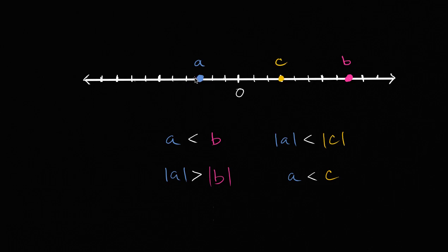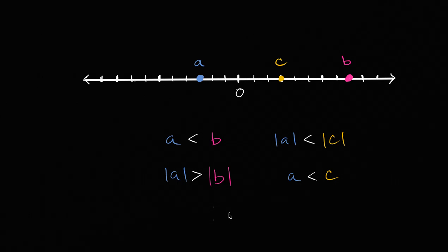What I have here are three numbers plotted on the number line: the number A, the number C, and the number B. Then we have four inequalities that involve absolute value. What I want to do is figure out which of these inequalities are true, given where A, C, and B are on the number line. I encourage you to pause the video and try to think through it on your own.